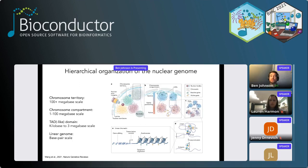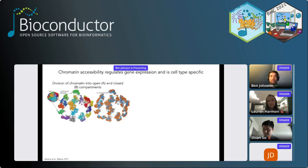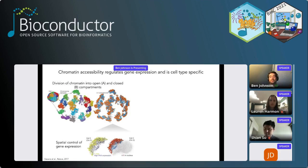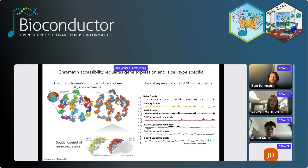This multi-scale view of the genome can provide great insight into cell-type specificity, regulatory space, and its contribution to health and disease. Chromatin compartments can be associated with open A compartments or closed B compartments, providing spatial control of gene expression. B compartments correspond to lamin-associated domains with low gene expression, while A compartments are associated with high gene expression. These patterns of open and closed chromatin can be cell-type specific, as shown for different types of immune cells.